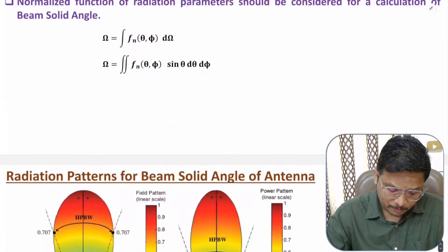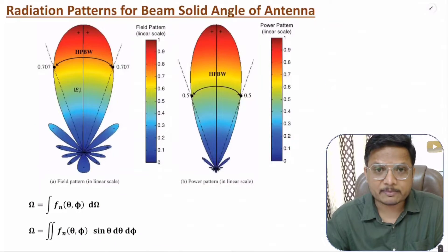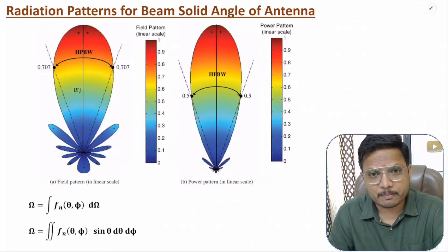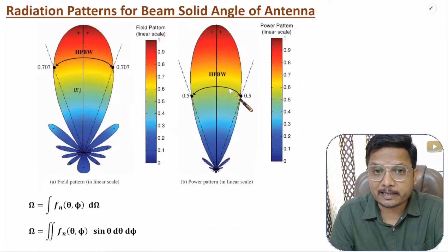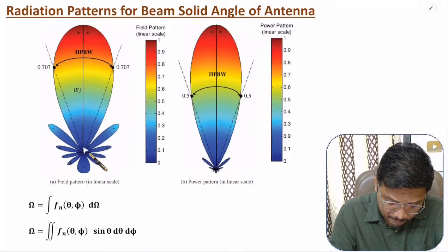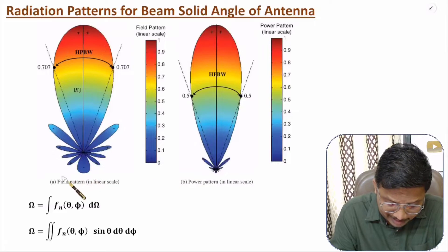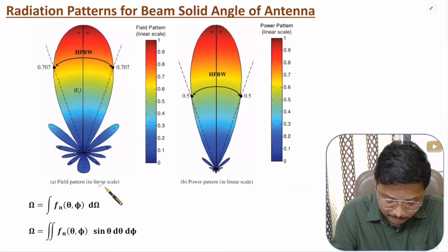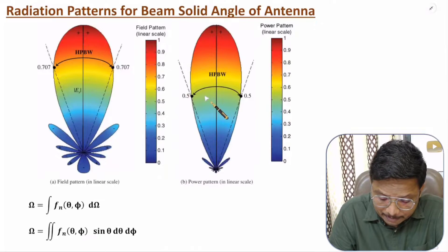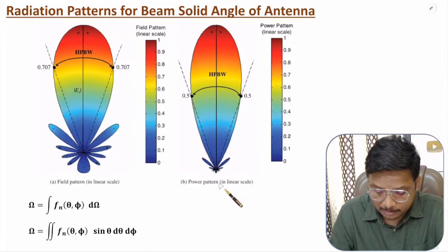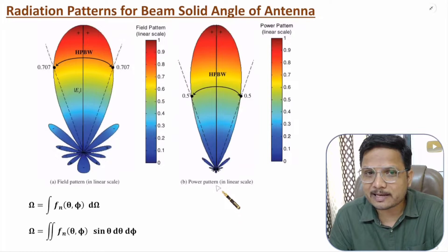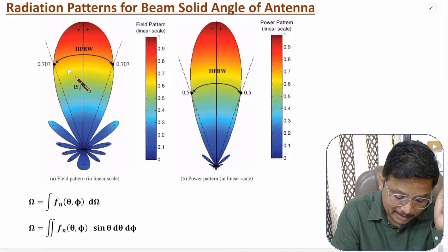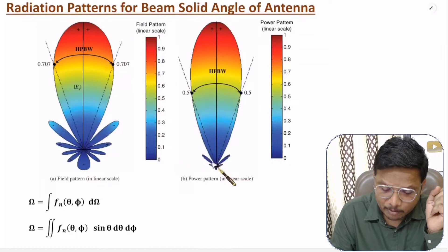Now I'll explain radiation patterns to understand beam solid angle calculation. You need to be careful when you observe this pattern. Both patterns shown are of the same antenna, but the first pattern is with respect to electric field and the same pattern is represented with respect to power. You might say both patterns are different — but no, both patterns are the same. The only difference is one has electric field in the pattern and the other has power.